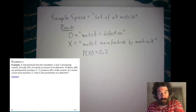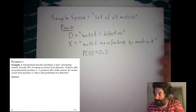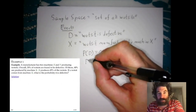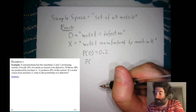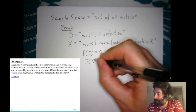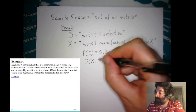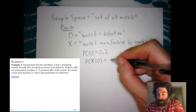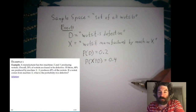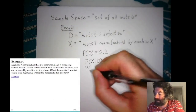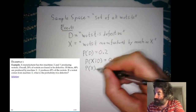Next, of the defective widgets, 40% are produced by machine X. This is a conditional probability: the probability that a widget was produced by machine X given that it's defective is 0.4. Then the last piece of information is that machine X produces 45% of all widgets, so the probability a random widget was produced by machine X is 0.45.